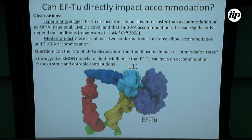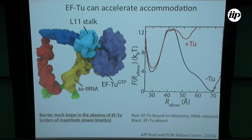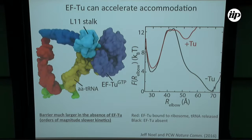We took our structure-based models and calculated free energy profiles without EFTU, then repeated it with EFTU — including only the excluded volume, so EFTU has no affinity for the tRNA. Just the fact that it occupies space: is that enough to have an effect? We got a barrier of about 12 kT when elongation factor Tu was not present. With EFTU present — just the excluded volume effect — the barrier goes down to about 2 kT. So there's a 10 kT change in the barrier height, corresponding to a roughly three order of magnitude change in the rate of accommodation.